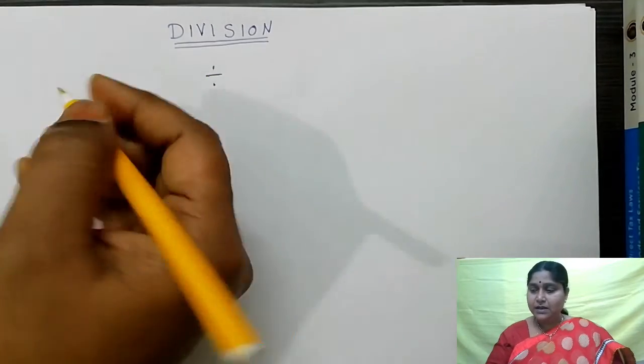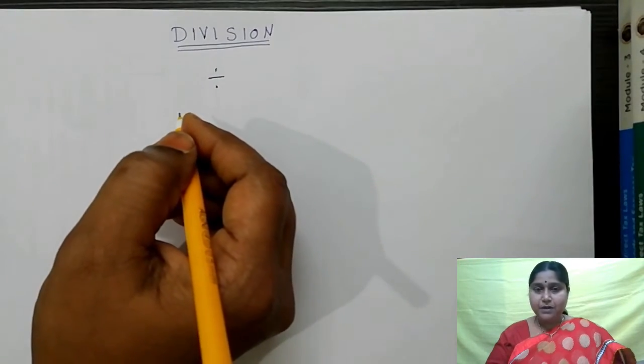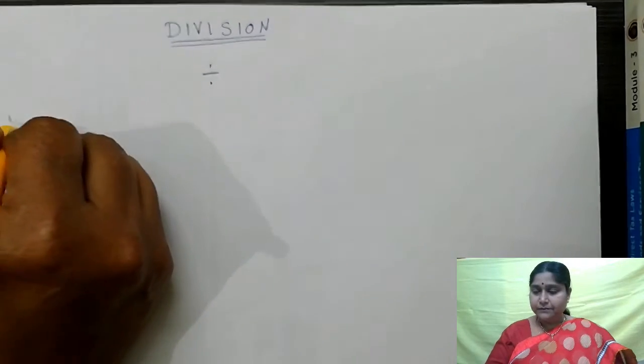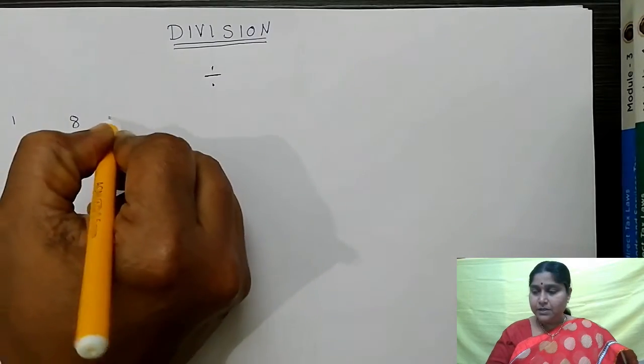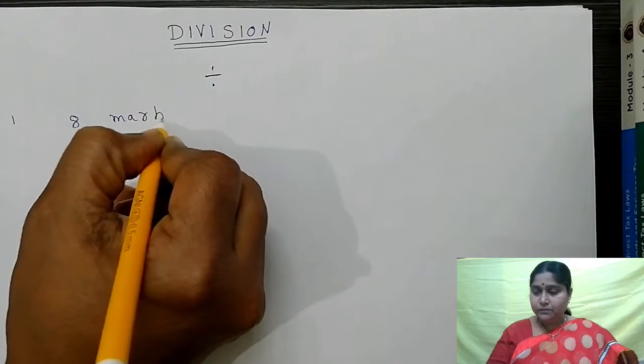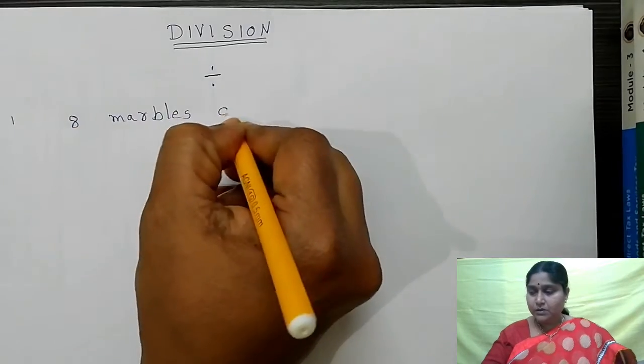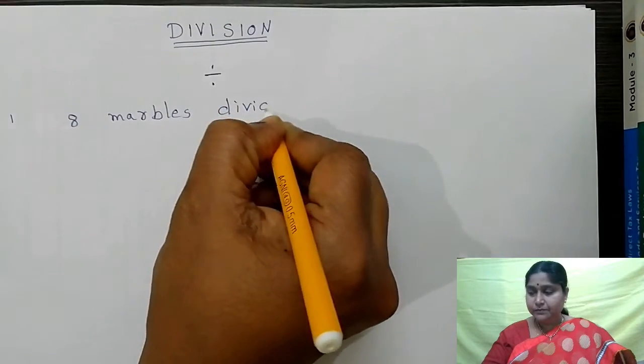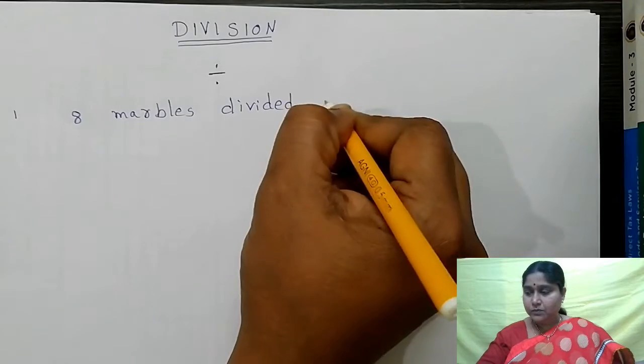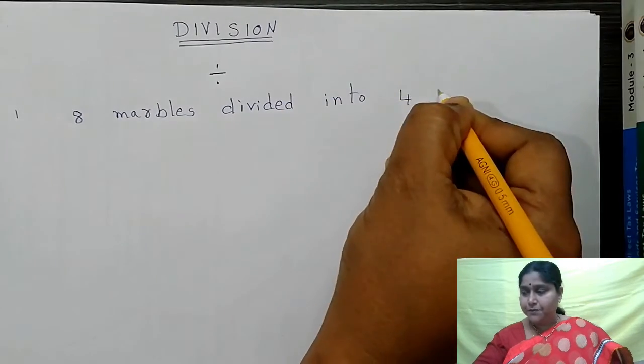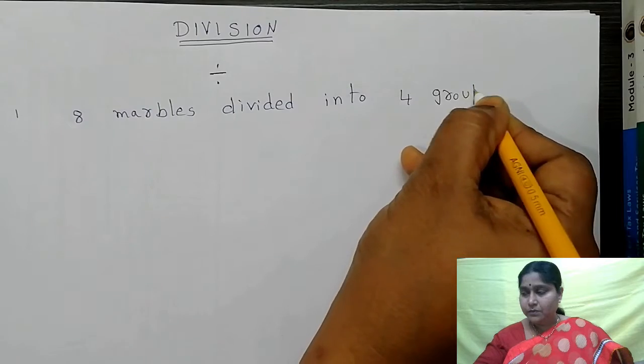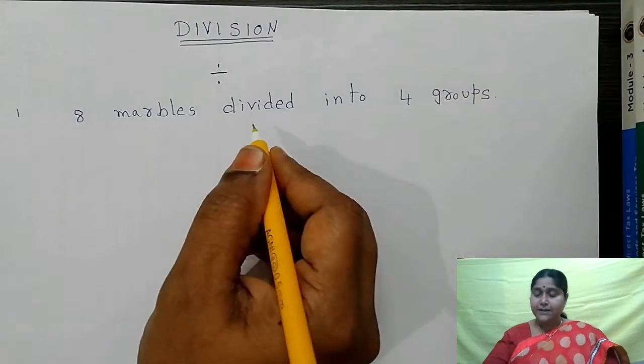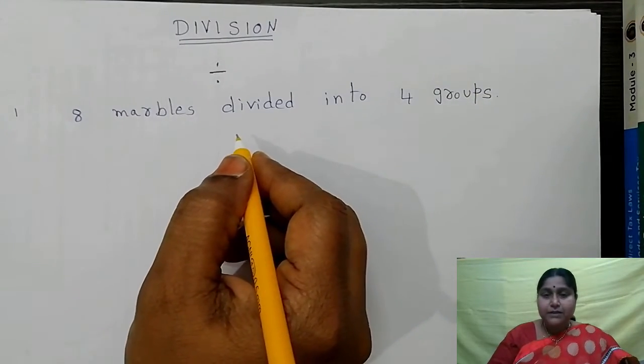First, I will give you a simple problem. See, 8 marbles are divided into 4 groups. Here, see, total how many marbles? 8 marbles.